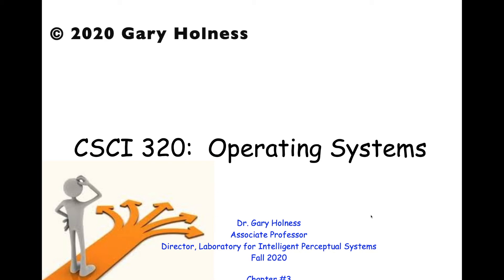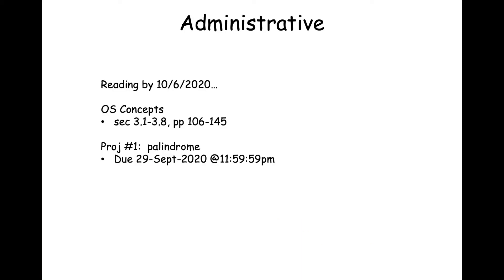And we're back. Happy Thursday. Today we'll continue on with our discussion of processes, but before we begin, we'll get first to some administrative bits. The reading by the 6th of October, pages 106 to 145 in the Operating Systems Concepts book. And Project 1 on palindromes is due 29th of this month, September, at the usual 11:59 and 59 seconds.